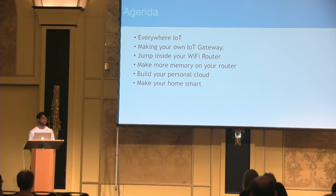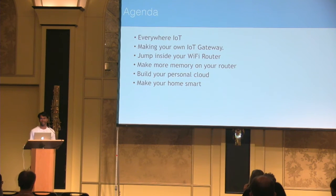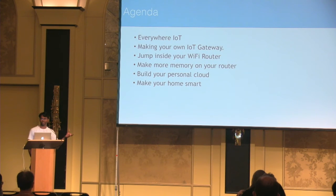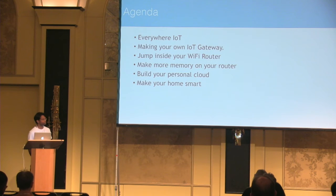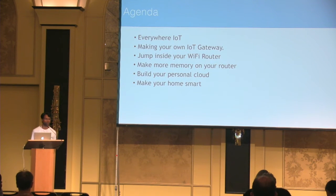The talk also covers how to expand the memory. OpenWRT gives you many options — you can install a large number of software packages. However, this home router is a very cheap device with memory constraints. So I'll explain how to expand the device memory. You can then build a personalized cloud IoT gateway in your home and control a bunch of smart devices.